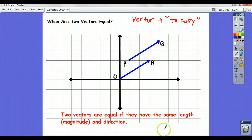Two vectors are equal if they have the same length or magnitude and direction, and that's it.